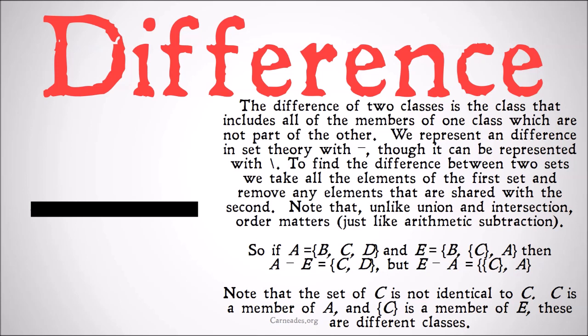Note that unlike union and intersection, order matters just like arithmetic subtraction. So if A = {B, C, D} and E = {B, {C}, A}, then A - E = {C, D} because we have taken all of the things that are in E out of A. Note we don't have a problem like we would with normal subtraction that E has things like A and the set of C that don't exist in A, but because they do share B we take B out and we're left with C and D.